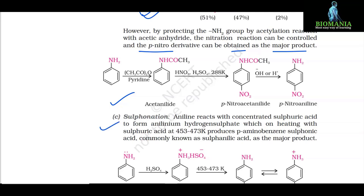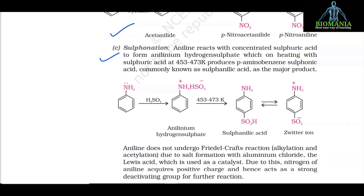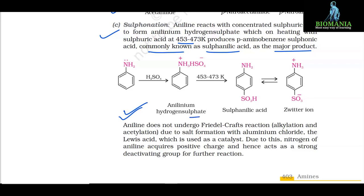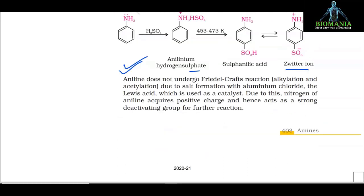c. Sulphonation: aniline reacts with concentrated sulfuric acid to form anilinium hydrogen sulfate, which on heating with sulfuric acid at 453–473 K produces para-aminobenzenesulfonic acid, commonly known as sulfanilic acid, as the major product. Aniline does not undergo Friedel-Crafts reaction (alkylation and acylation) due to salt formation with aluminium chloride, the Lewis acid catalyst; nitrogen of aniline acquires a positive charge and hence acts as a strong deactivating group for further reaction.